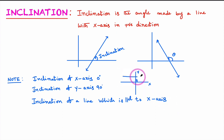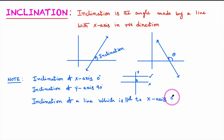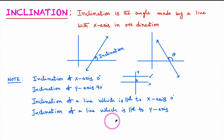Inclination of a line which is parallel to the x-axis: observe here, this is the line which is parallel to the x-axis. What is the angle made by this line with the x-axis? As these two are parallel, we can say that the angle between them is 0 degrees. So the inclination of a line parallel to the x-axis is 0 degrees.